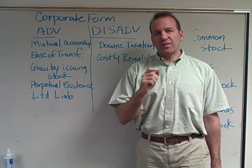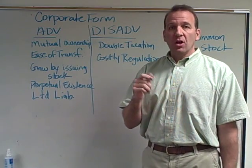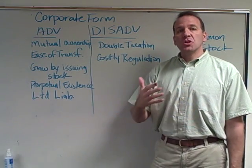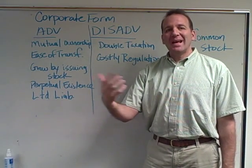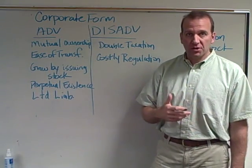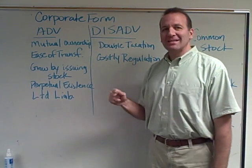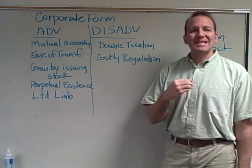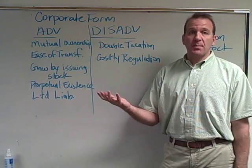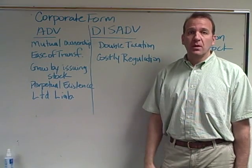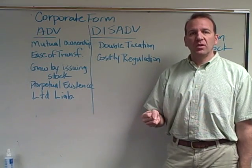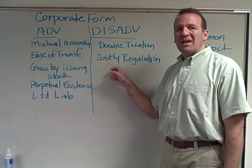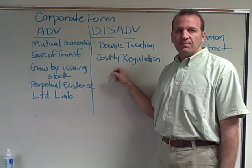A disadvantage is double taxation, and this deals with dividends. A dividend is when the corporation gives money to the shareholders. That dividend is not tax deductible for the corporation, but when you receive that dividend as a shareholder, you have to pay taxes on it. So the corporation didn't get the benefit of deducting those from their tax return, and the shareholder still pays taxes on them — that's where the double taxation comes in.